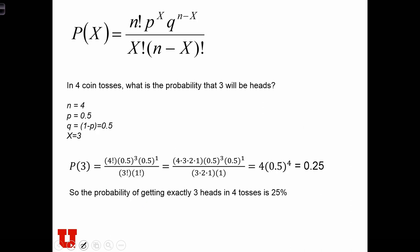So let's apply the binomial probability distribution to determine the probability of obtaining three heads in four consecutive coin tosses. So in this case, 4 is the number of experiments, n. So we have n equals 4.